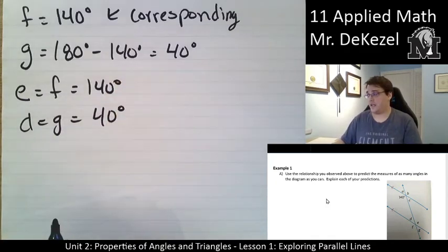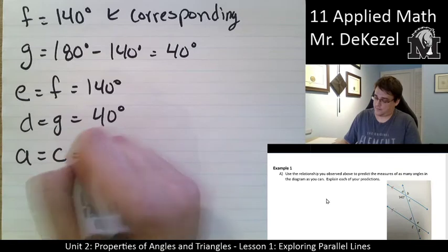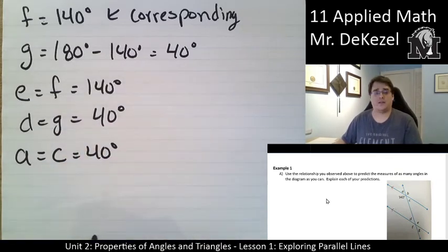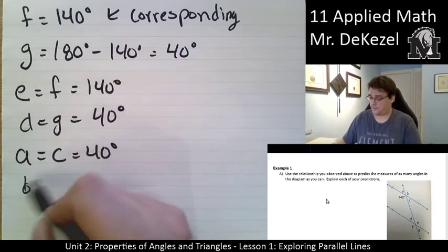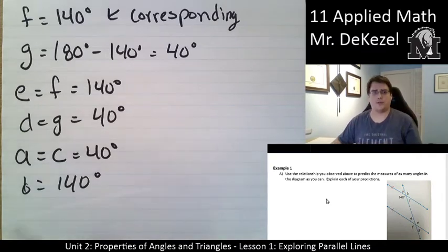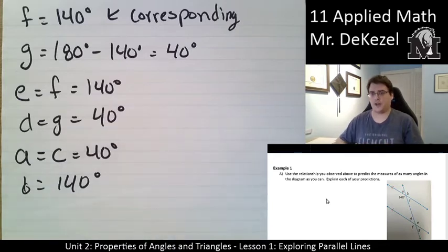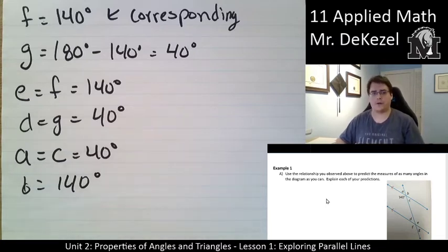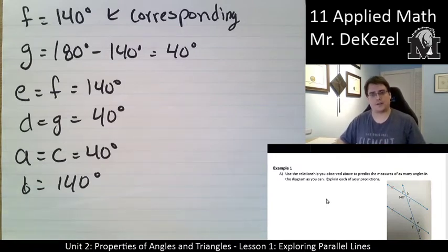We can do the same on the other side — both A and C would be 40 degrees. So we can use the relationships we know when a transversal crosses parallel lines to determine all of the angles we need to find — all eight of them are given here. If you have any questions about this, please let me know. You can pause the video in class and raise your hand, or if you are at home, send me an email and I will get back to you as soon as I can.